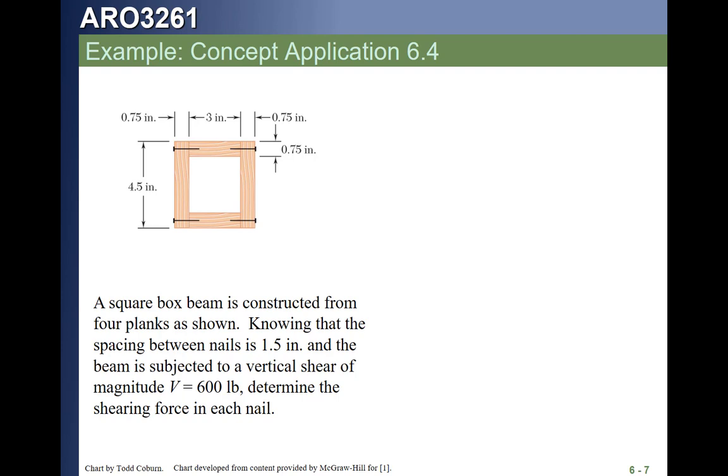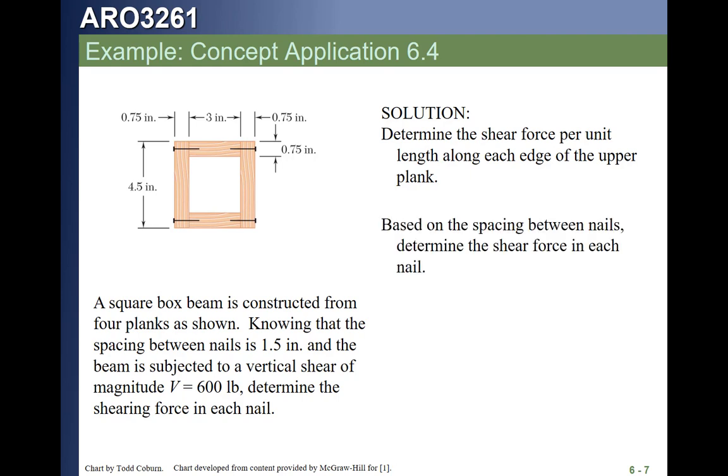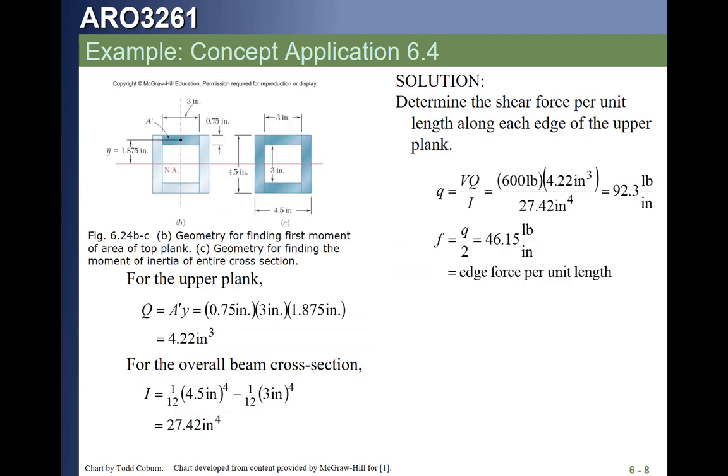We see it's going to have to go through two paths, one at the left nail and one at the right nail. Therefore, the shear flow, little q, will be divided by two, and then to calculate the force per nail, we will then multiply by the spacing of the nails. This is a solution procedure from Barron Johnson. And here it is in numbers. Big Q on the upper left, I on lower left, the little q on the upper right.